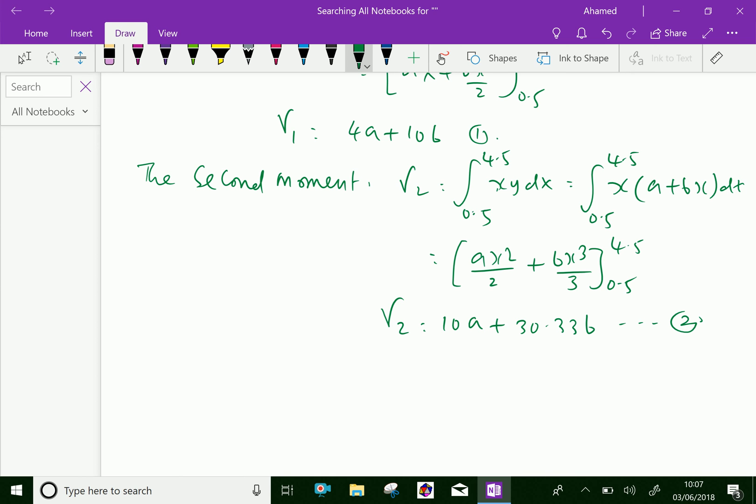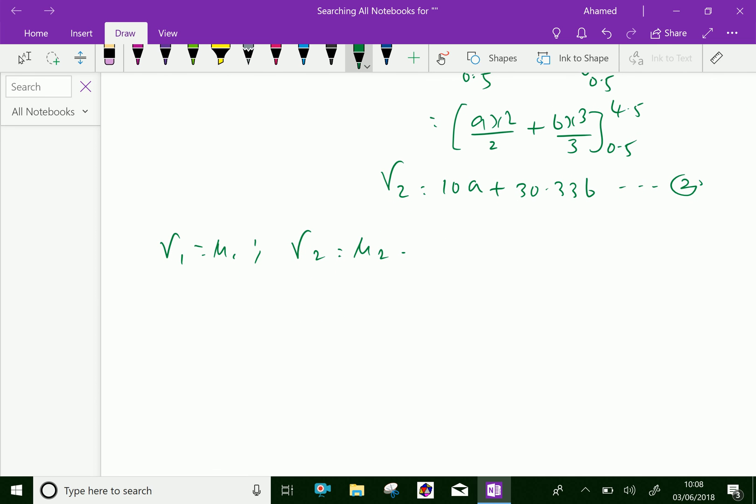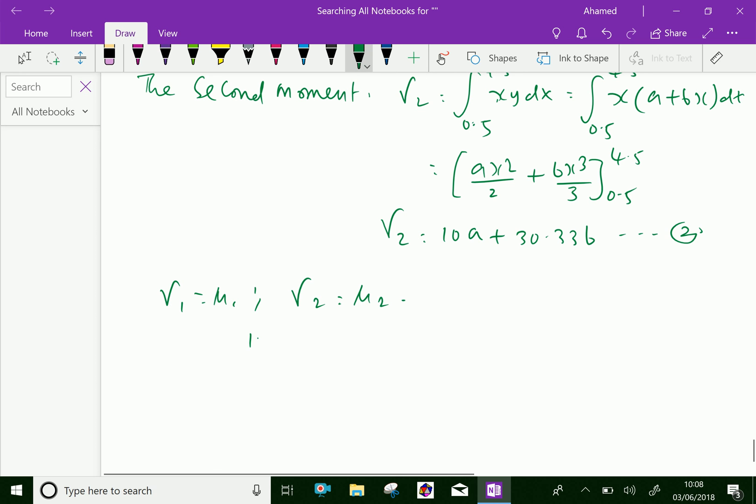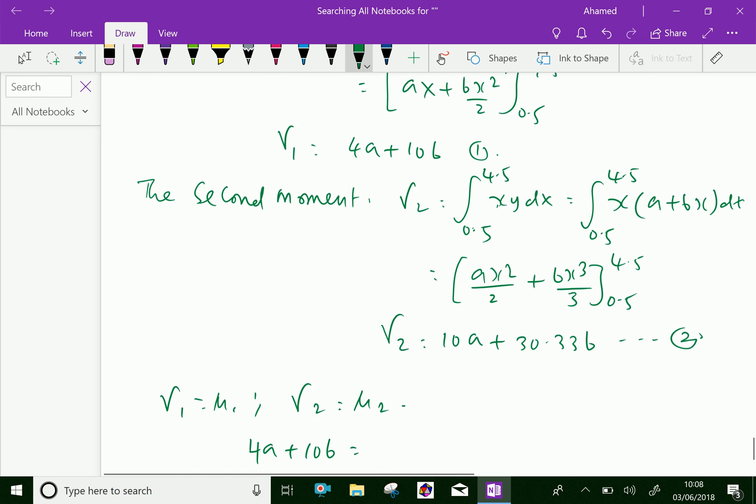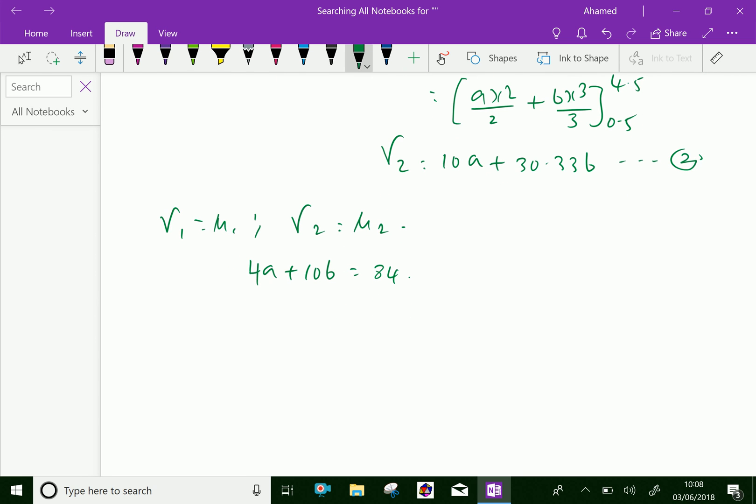Here the observation equations are therefore we can equate both values: gamma 1 equal to mu 1 and gamma 2 equal to mu 2. Therefore we are equating. The first equation we have 4a plus 10b equal mu 1 which is 84. Then second equation 10a plus 30.33b equal to 227. Let this be equation 3 and equation 4.